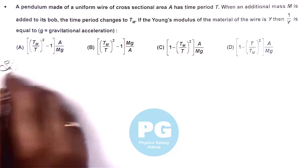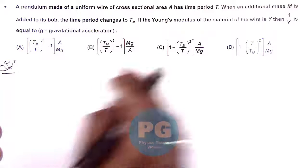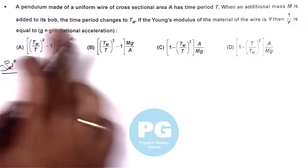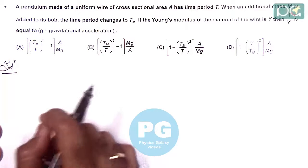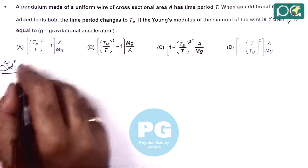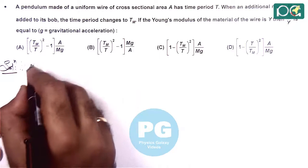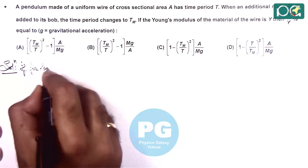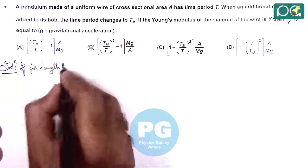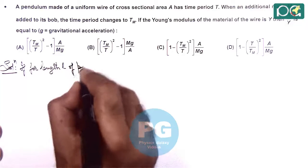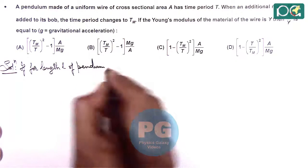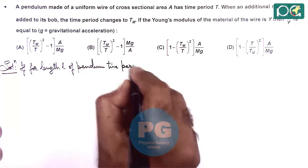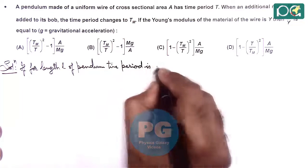So here, we know due to addition of mass M, the wire is elongated by a length delta L. We can see if for length L of pendulum time period is T.